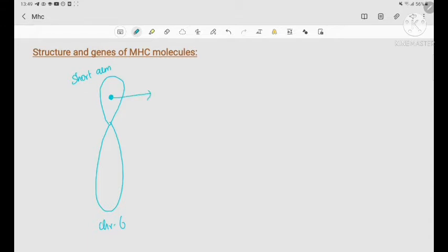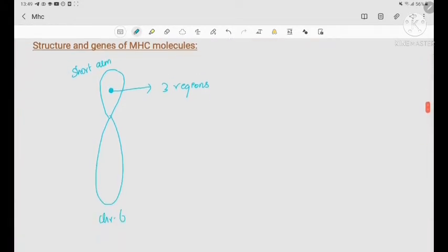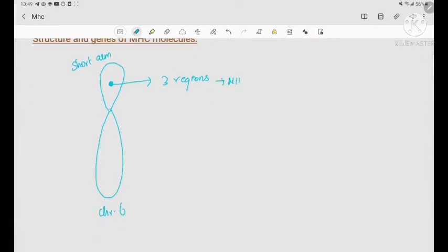This gene has three regions. The three MHC regions are region 1, region 2, and region 3. MHC 1 codes for proteins A, B, and C, and MHC region 2 codes for proteins DP, DQ, and DR.